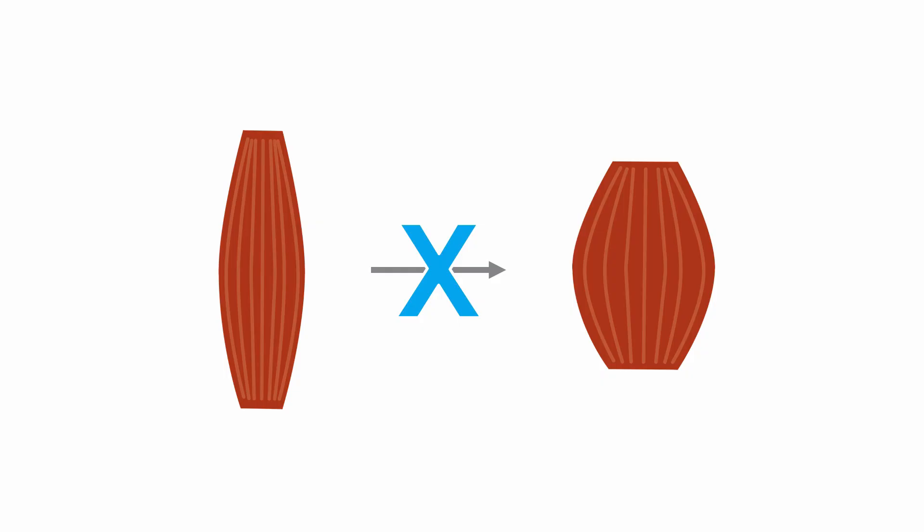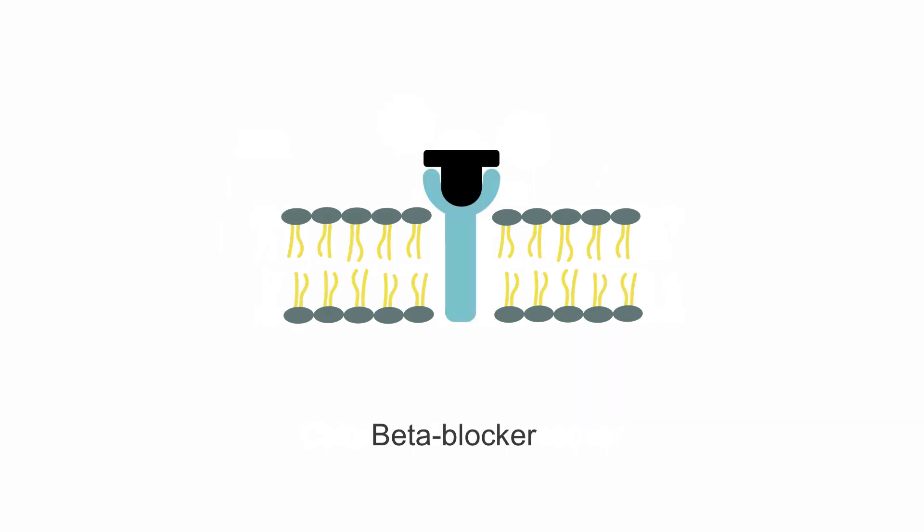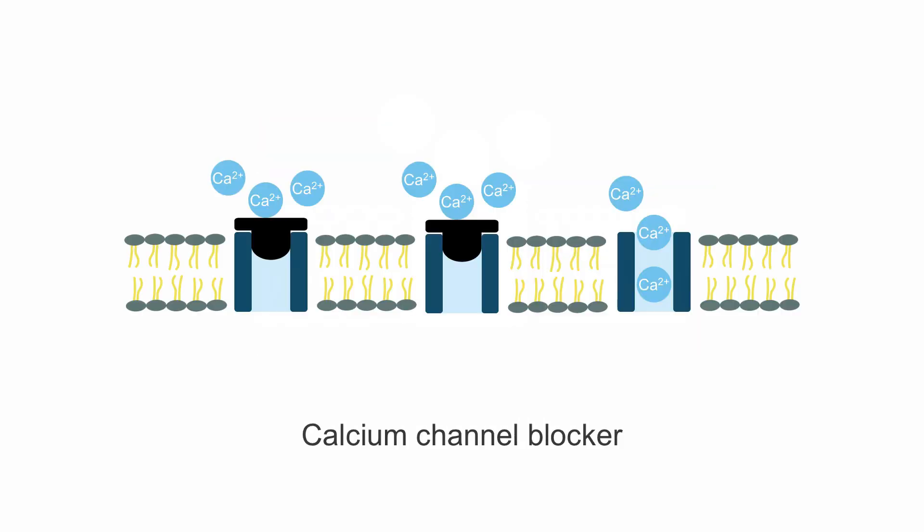The pathway for myocyte contraction may be interrupted in several places. The most common significant cardiotoxic overdoses are non-dihydropyridine calcium channel blockers and beta blockers. Calcium channel blockers like diltiazem and verapamil interrupt the influx of calcium at the cell membrane, which can decrease heart rate and the strength of contraction.